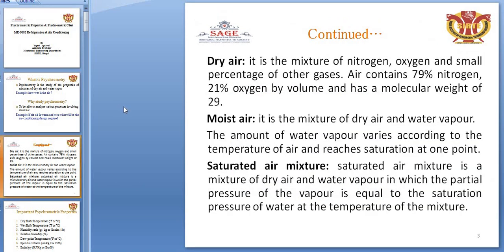Dry air is a mixture of nitrogen, oxygen, and a small percentage of other gases such as sulfur dioxide and carbon monoxide. When air contains 79% nitrogen and 21% oxygen by volume, and has a molecular weight of 29.